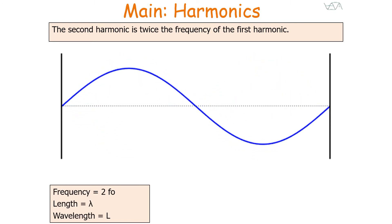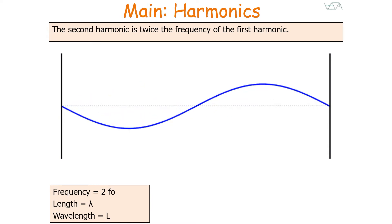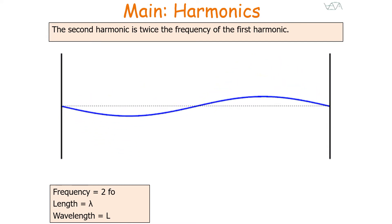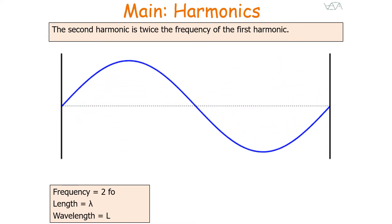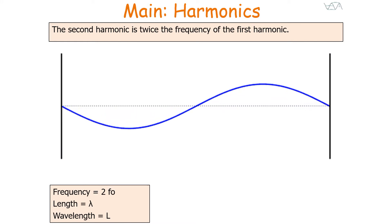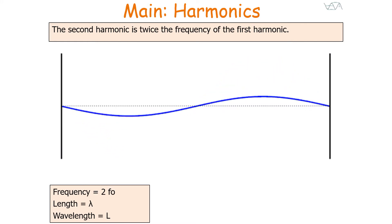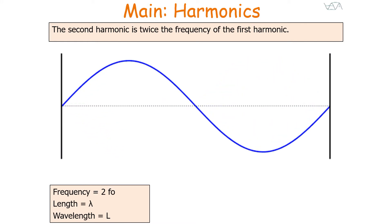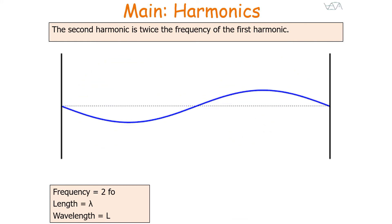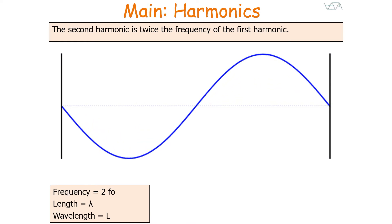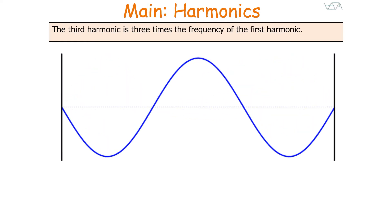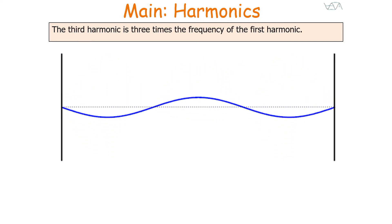The frequency of the second harmonic is two times the frequency of the first harmonic, the length of the string is equal to the wavelength, and conversely the wavelength is equal to the length of the string.